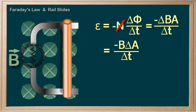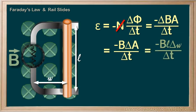Let's look at the area a little closer. We know that A is changing in a fairly predictable way. A equals length times width. Our length is constant — the same length as the slide or the wire — so that leaves only the width as changing. The change in width is the same as the velocity of the slide times the time it has been moving, T.